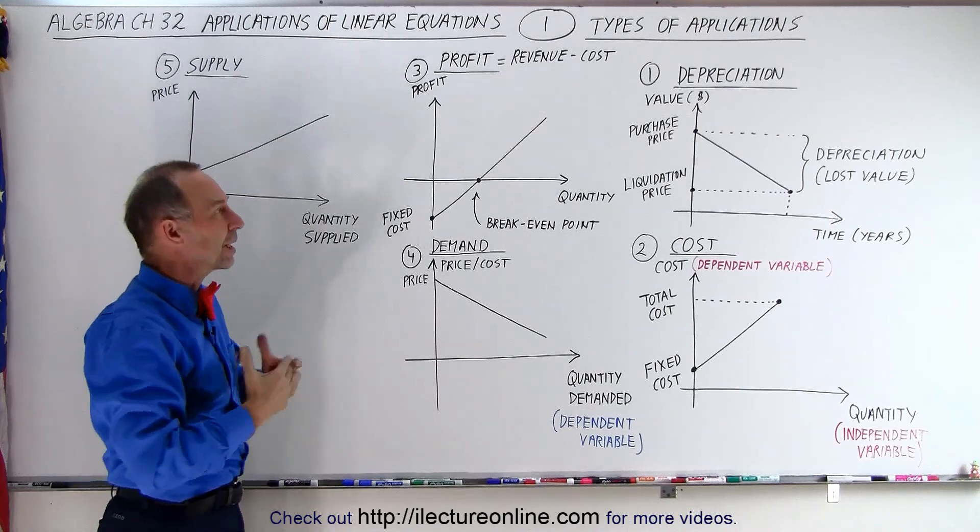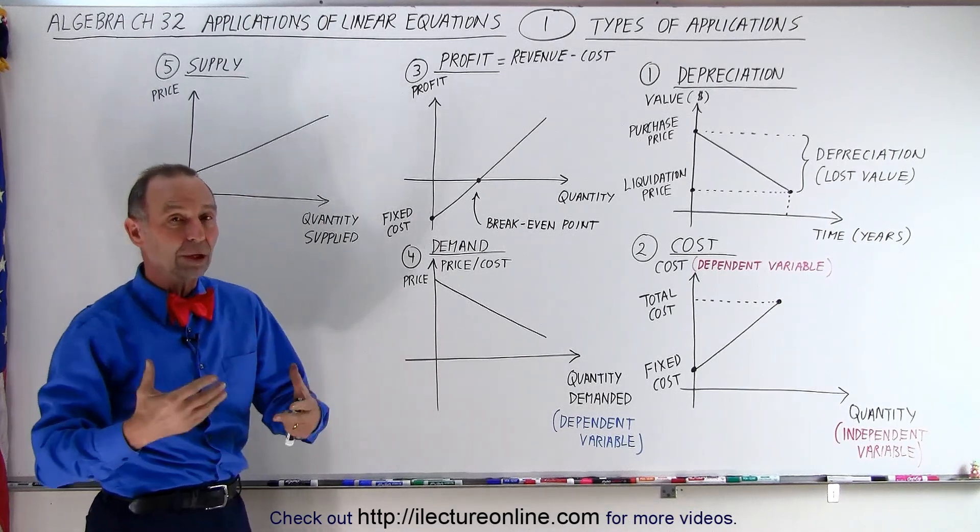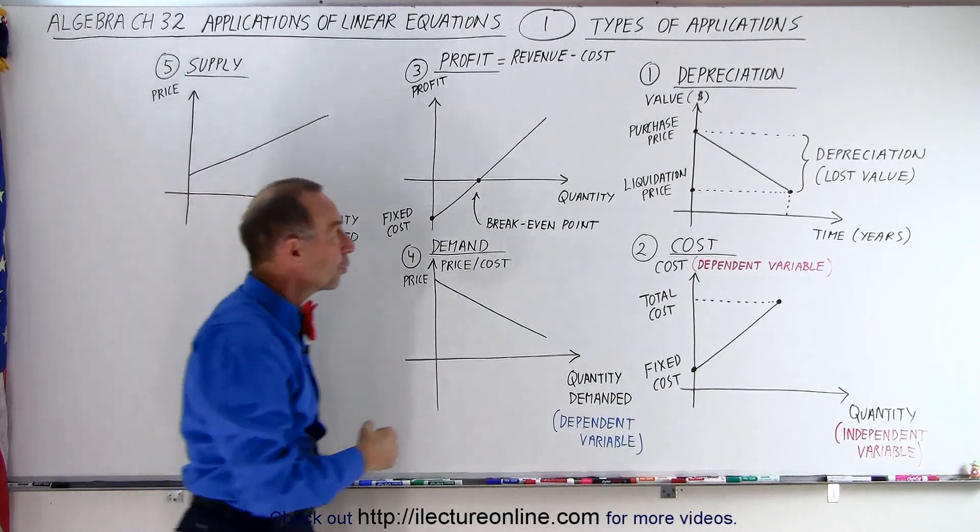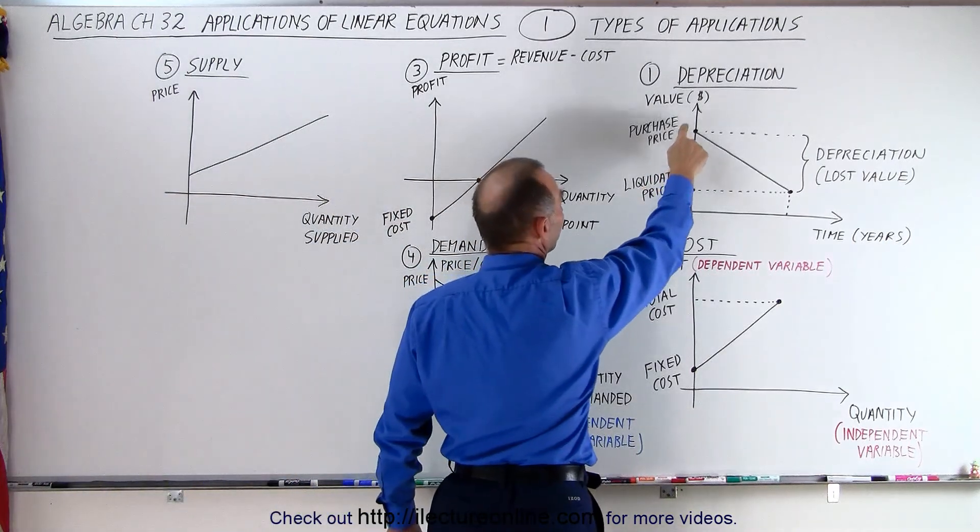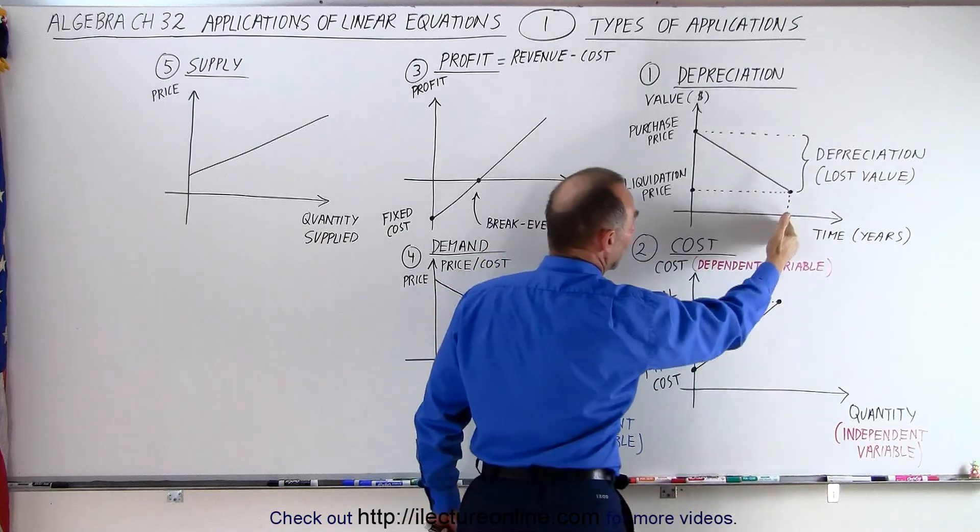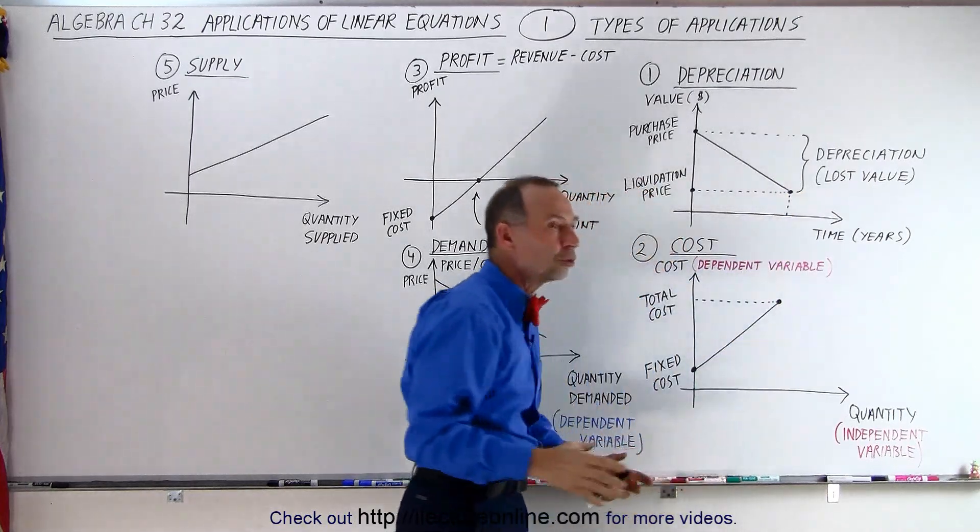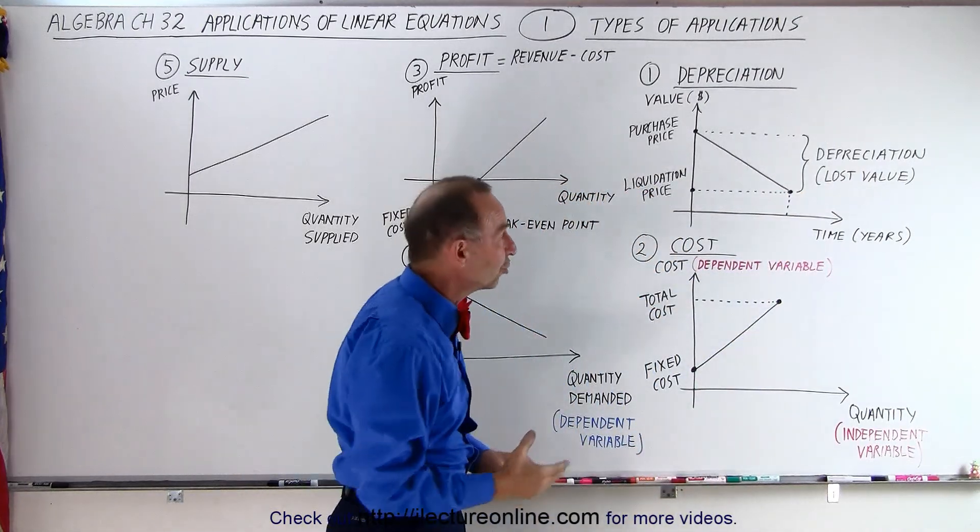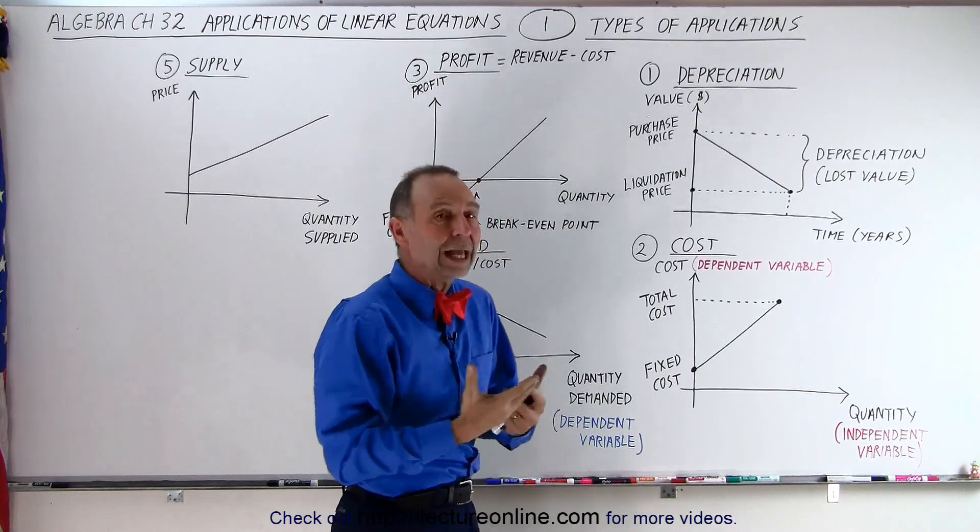First, depreciation. Let's say you have a company that needs to buy a machine in order to produce something, so you're going to initially spend some money called the purchase price. As you're using the machine over a period of years, after a while the machine becomes old, you may want to replace it with a new machine and so you want to liquidate the machine.